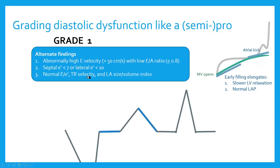Even if I have a high E velocity, if my E to A ratio is low, I'm still dealing probably with grade 1 diastolic dysfunction as long as my E to E-prime is still normal. TR velocity will be normal or not significantly elevated, and left atrial size and volume should not be significantly elevated in grade 1 diastolic dysfunction. Early filling is going to elongate because I have slower LV relaxation but normal left atrial pressure.